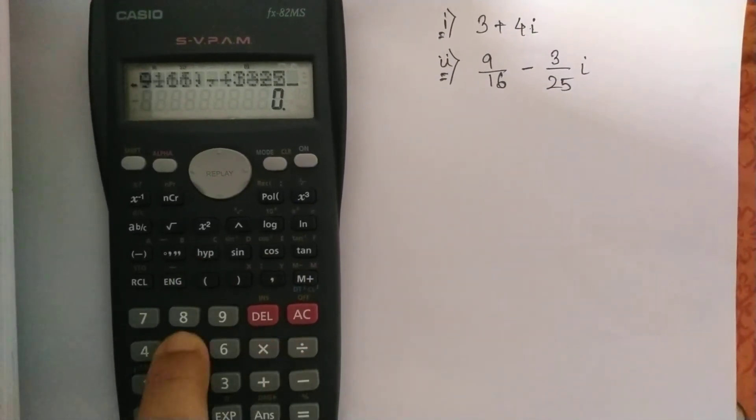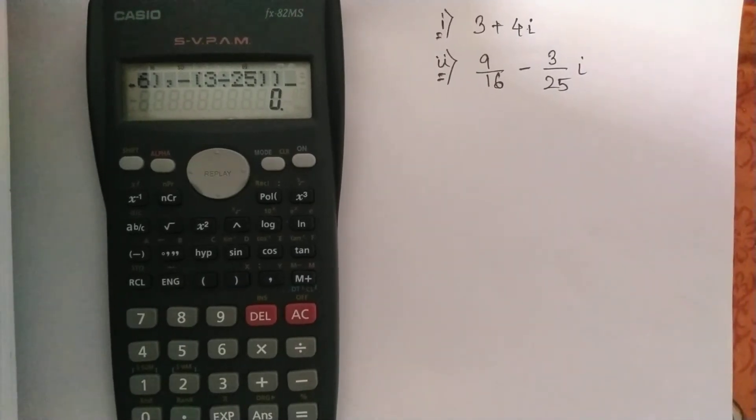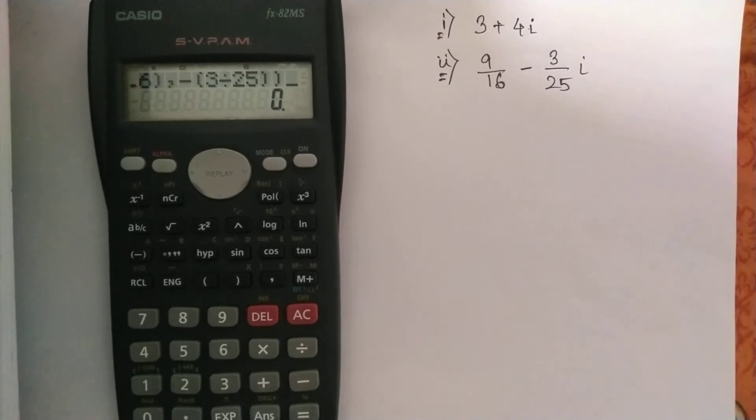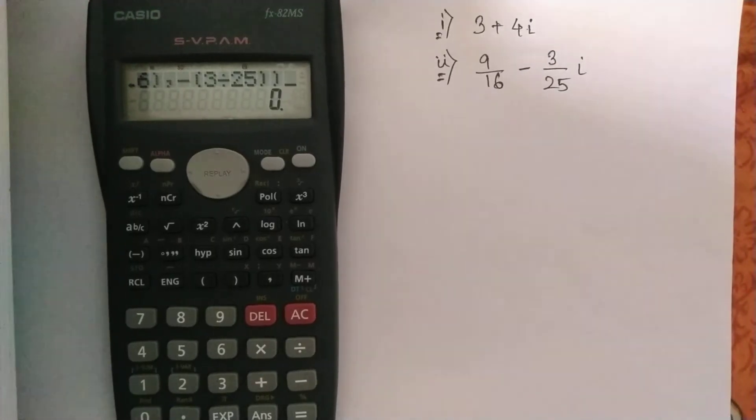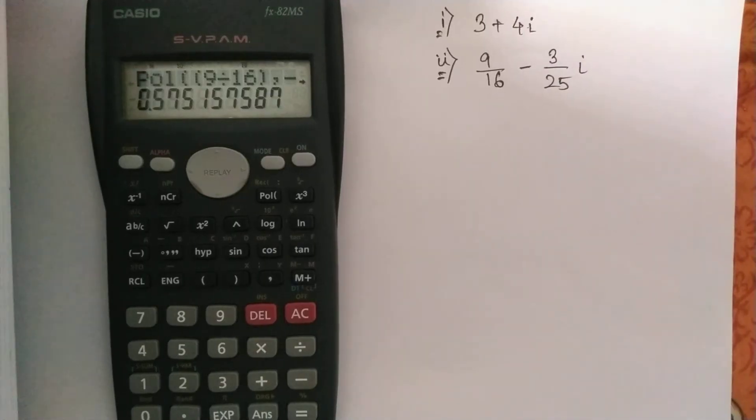And we close the bracket. I close the initial bracket of the polar form. So if you press enter, you will get the modulus 0.575.